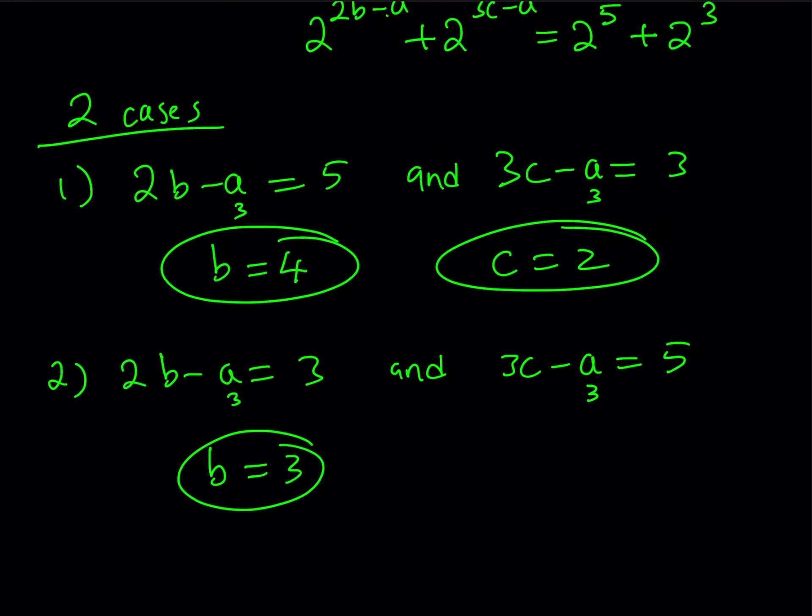Since a equals 3, remember we found that previously. From here, we get 2b equals 6, which means b equals 3. So that looks like a good solution, but let's check for c as well. If a equals 3, then we get 3c equals 8. But unfortunately, this does not give us any integer solutions. So in this case, c is not going to be an integer.